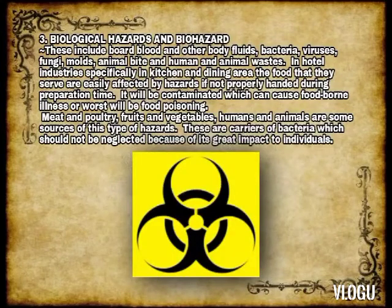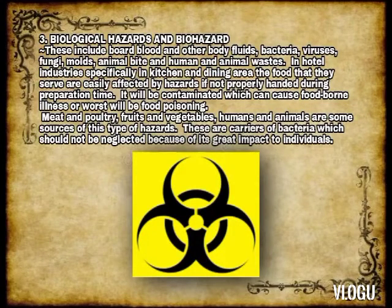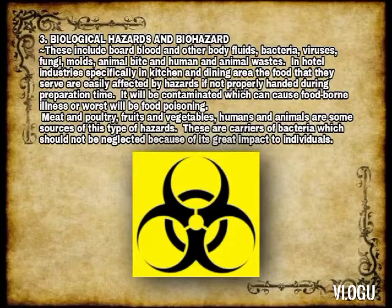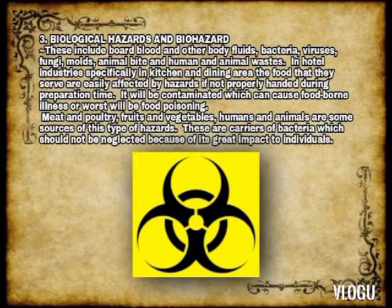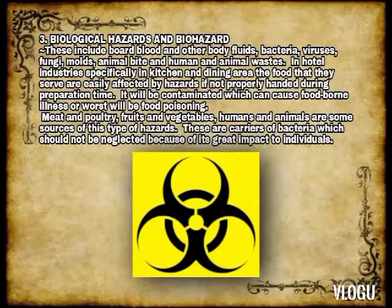Number 3: Biological Hazards and Biohazards. This includes blood and other body fluids, bacteria, viruses, wind-drying molds, animal bites, and human and animal waste. In hotel industries, specifically in the kitchen and dining area, the food served is easily affected by hazards. If not properly handled during preparation, it will be contaminated, which can cause foodborne illness or worse, food poisoning. Meat and poultry, fruits, and vegetables, as well as humans and animals, are some sources of this type of hazard, as they are carriers of bacteria that should not be neglected due to their great impact on individuals.